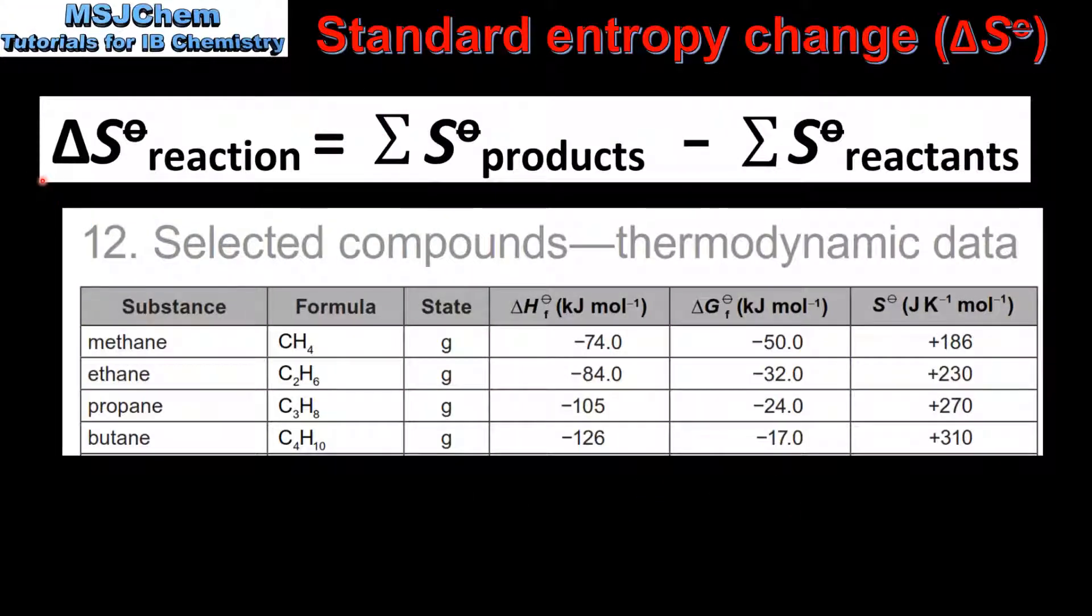So let's start by looking at the equation to calculate standard entropy change. The standard entropy change of a reaction is equal to the sum of the absolute entropy values of the products minus the sum of the absolute entropy values of the reactants.